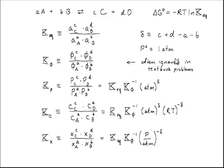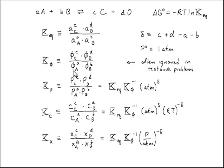We also define here a reference pressure of one atmosphere. Last time we kept encountering this ratio of fugacity coefficients to the power of the stoichiometric coefficients, and it's convenient to go ahead and define that as a quantity k_phi.